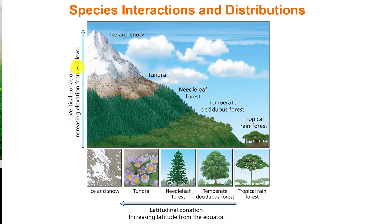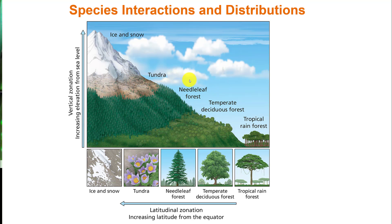There's also a similar pattern with vertical zonation — moving away from sea level rather than from the equator. Within one tight range of latitude, going up a mountain, you can experience the same zonation. For instance, New Zealand's Fox Glacier: starting at sea level with tropical rainforest, going up the mountain you encounter temperate deciduous forest, then needle-leaf forest, then tundra, and at the very top ice and snow.